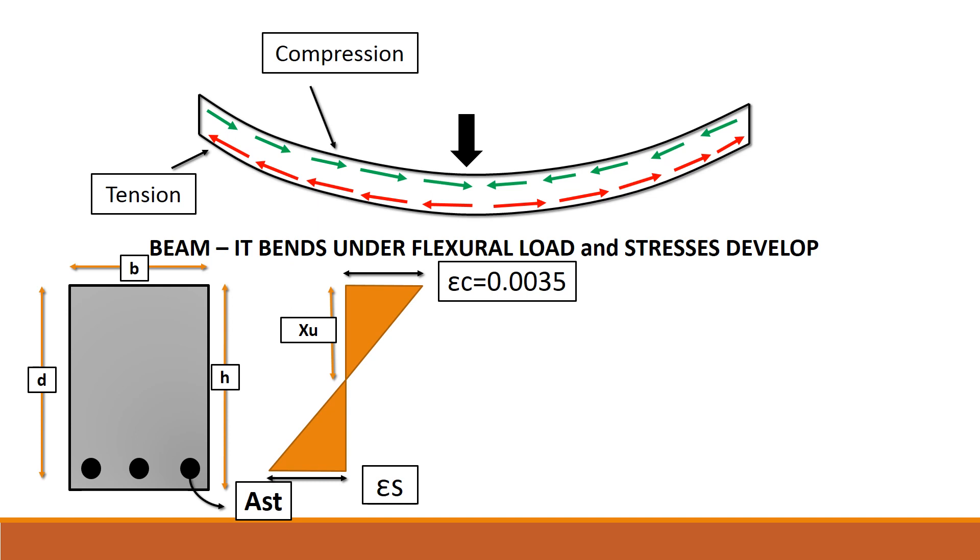Now this epsilon s would be varying depending upon the yield strength of steel. In the analysis and design, the tensile stresses in concrete are neglected below the neutral axis. We know that the neutral axis is the section at which area of steel in tension would be same as area of concrete in compression.